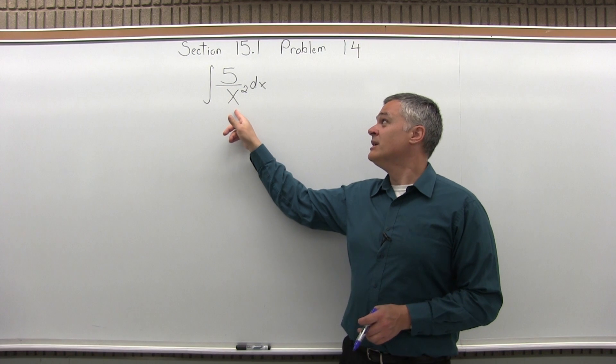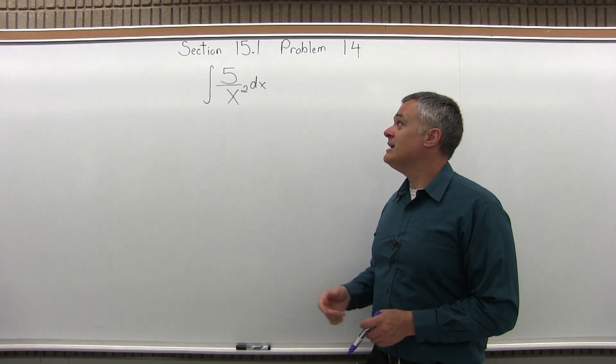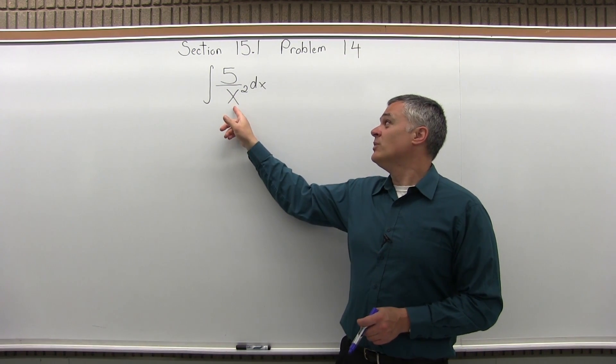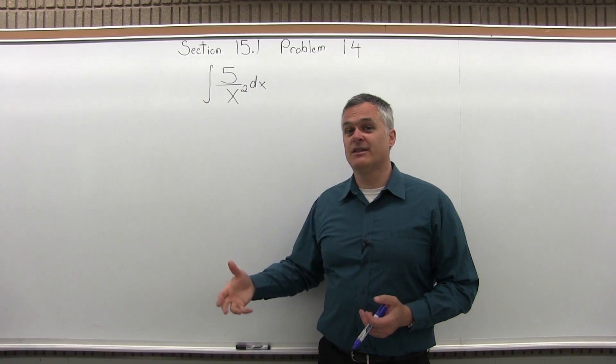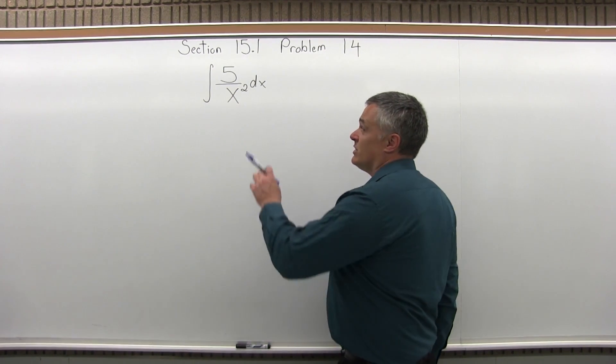Instead of 5 over x squared. So if you watch number 13, we wound up with a case that didn't fit our formulas, and we had to use that ln, that natural log. This one we don't.